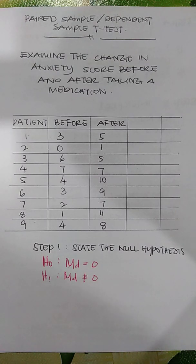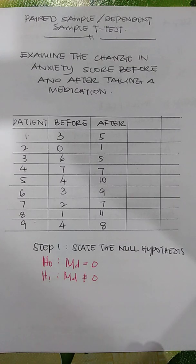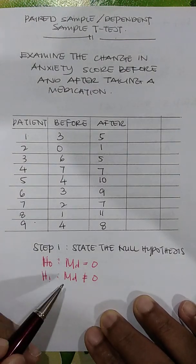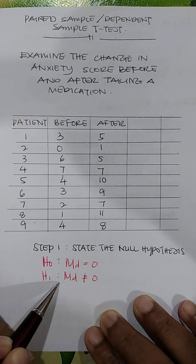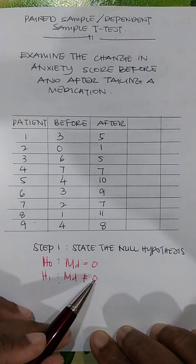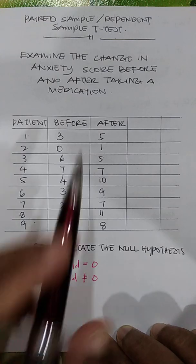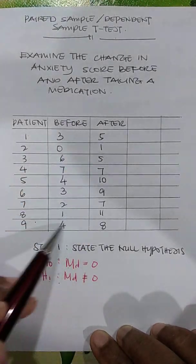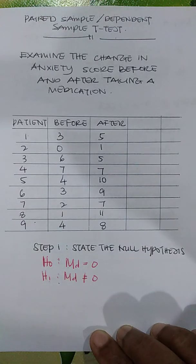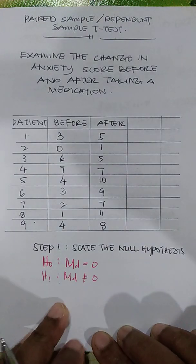So when the average of the differences is equivalent to 0, there is no difference — the score before and after is the same. The alternate hypothesis H1 states that the difference is not equivalent to 0, meaning the average difference between scores before and after is not zero.